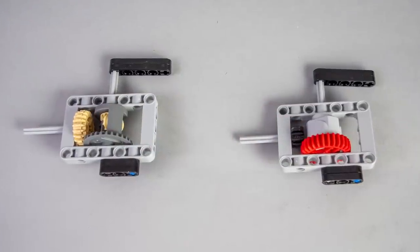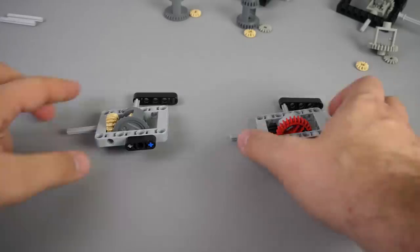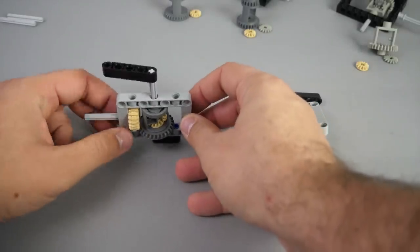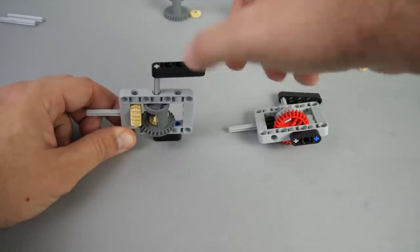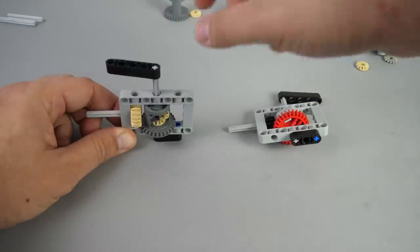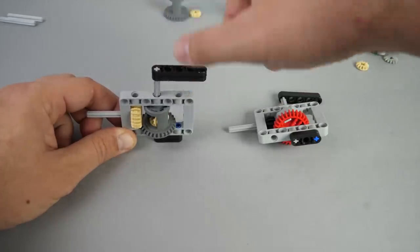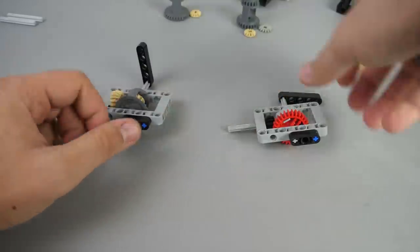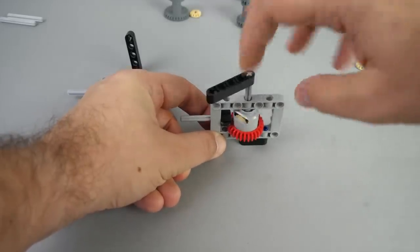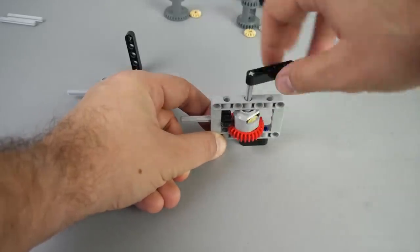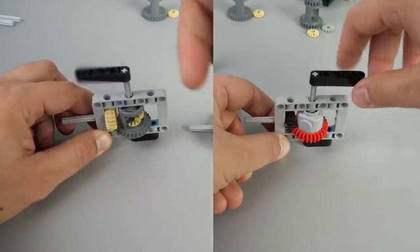You might want to ask if the newer one requires more power to turn, as it has more gears inside and possibly more friction. I fixed one output and will try to spin the other one to see if there's any difference. As you can see, the new one actually seems to have a smoother operation and it spins more.